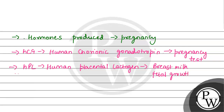Third hormone जो हमारा produce होता है वो होता है relaxin. Relaxin क्या करता है - ये हमारे pelvis ligaments को relax करने में help करता है, so that delivery के time पर जो movements और contractions होनी हैं वो easily हो पाएं, and baby easily deliver हो पाए, and ज़्यादा problem ना हो.